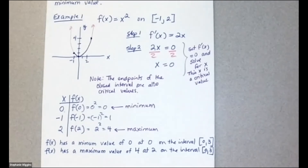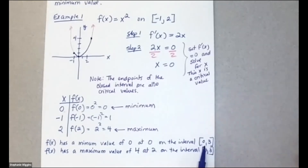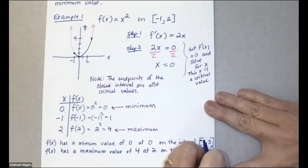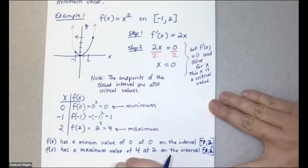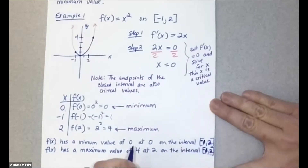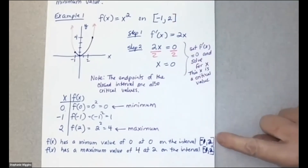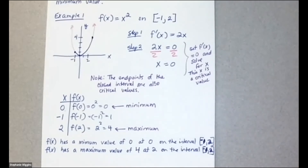A student asks where the interval [0, 3] came from — that was actually written by mistake. The correct interval is [-1, 2], as given. The instructor acknowledges writing the wrong interval, possibly confusing it with another problem, and corrects it to negative one to two.